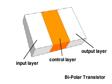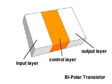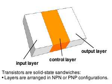The layers are either N-type material, which conducts negative charges, or P-type material, which conducts positive charges. The layers are arranged like a sandwich in an NPN or PNP configuration.